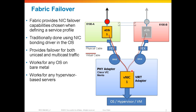Here we have a virtual adapter that has been provisioned on this server and is shown to an OS or hypervisor as an adapter. And that virtual adapter has a virtual cable. In this case, we've chosen Fabric A for that primary virtual cable to flow up to its virtual ethernet port on Fabric A, 6100A. And that virtual ethernet port is pinned to an uplink — in this case, the red uplink.